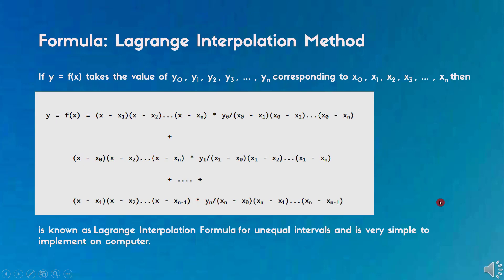There are different methods for interpolation, for example Newton's forward interpolation, Newton's backward interpolation, Newton's general interpolation with divided difference, and there is Lagrangian interpolation. Here we are dealing with Lagrangian interpolation method. The formula for Lagrangian interpolation is given - this is known as Lagrangian interpolation formula for unequal intervals and is very simple to implement on computer.